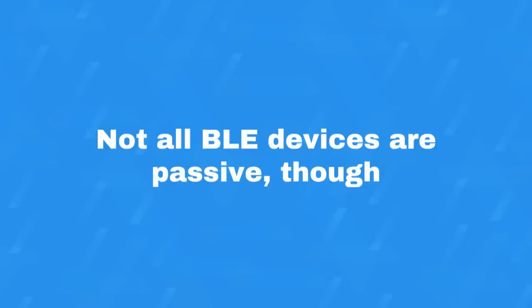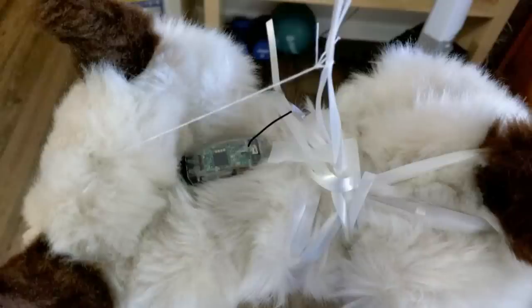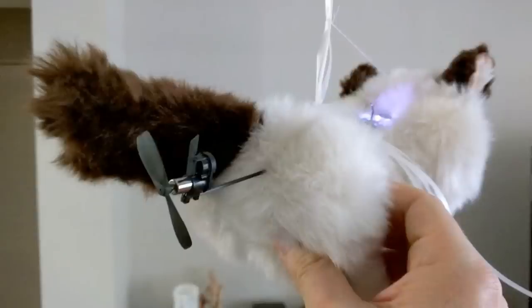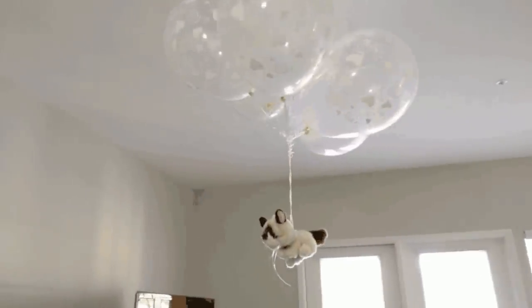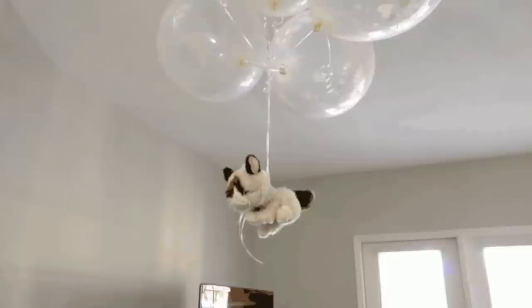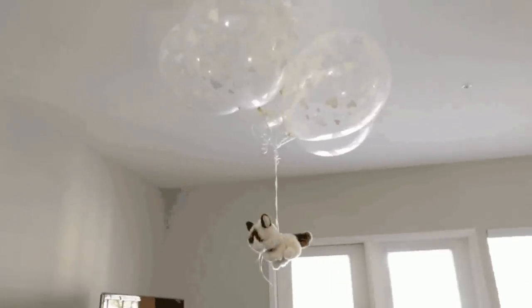Not all BLE devices are passive, though. There was a cool demo produced by a Googler with the Bluetooth API. He got a grumpy cat toy, attached some helium balloons to it so that it would fly, put a little Bluetooth module inside, and stuck a rotor in its backside. Then with a little control panel, he made it fly around his apartment.